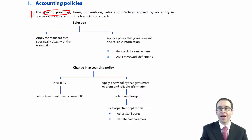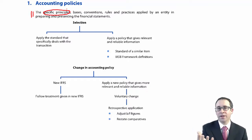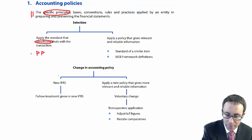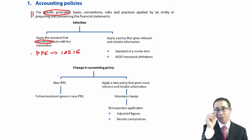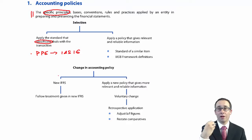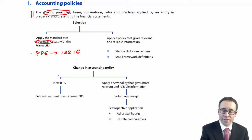In terms of how we select an accounting policy, it's logic. First of all, you choose the standard that specifically deals with the transaction. So if you have property, plant and equipment, you would start with IAS 16. If you have land and buildings used as part of your normal day-to-day operations — maybe for a factory, a warehouse, or your head office — then that's IAS 16.